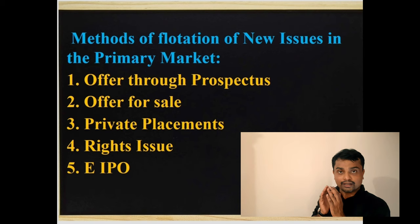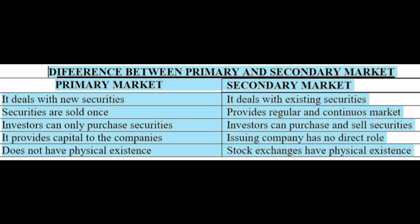Now, just before moving to secondary market or stock market, let's have a comparison between primary market and secondary market. First, primary market deals with new securities, whereas secondary market deals with existing securities. Second, in primary market all securities are sold once, but secondary market provides a regular and continuous market. Third, from the investor's point of view, investors can only purchase securities from the primary market, but in the secondary market investors can both purchase and sell securities.